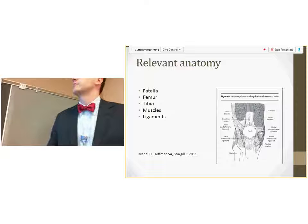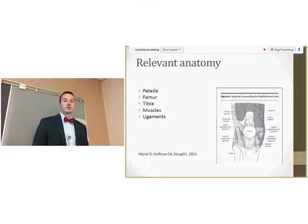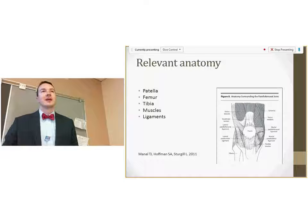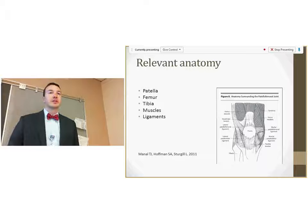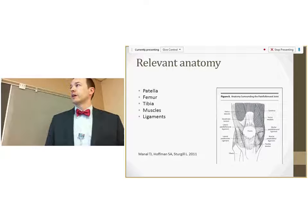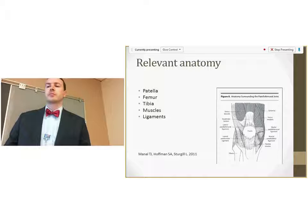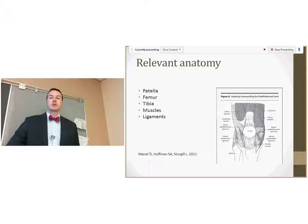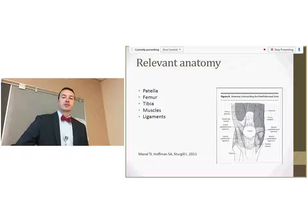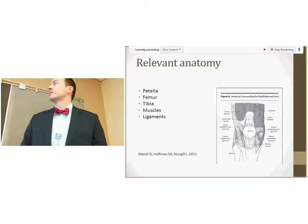The relevant anatomy of the patellofemoral joint includes the patella, which sits at the distal end of the quadriceps tendon in the trochlear groove of the femur. Individuals with a more shallow trochlear groove are more susceptible to shearing forces and instability. The tibia also plays an important role—rotational or positional faults in the tibia can lead to increased knee valgus force, further shearing the patella. Important muscles include the quadriceps, hamstrings, IT band, and the glute medius, which affects overall lower extremity alignment. The medial and lateral patellofemoral ligaments provide additional stability to the patella.